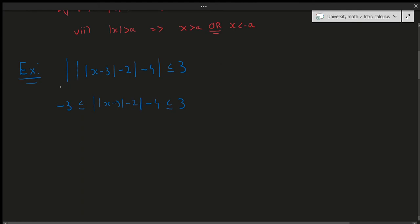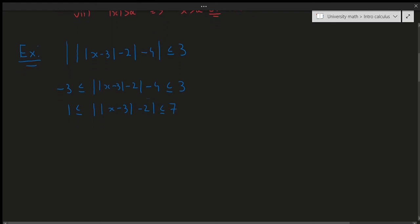So this kills off one of the absolute values. Now what can we do? We can add 4 to both sides to get rid of this minus 4. So if we go ahead and do that, we will get 1 is less than or equal to the absolute value of the absolute value of x minus 3, minus 2, which is less than or equal to 7. Now we should probably use the case situations. So we're going to have the negative case and a positive case. Let's do the negative case first because that one is a little bit more interesting. In this situation, we're going to have 1 is less than or equal to the negative of the absolute value of x minus 3, minus 2, which is less than or equal to 7.